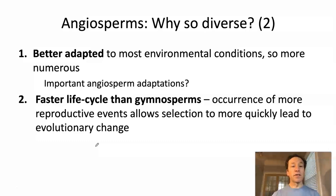Second, the life cycle of angiosperms is faster than gymnosperms. We just alluded to one aspect of this — the gametophyte generations happen very quickly in angiosperms (pollen and ovules). But life cycles are also faster more generally. Why is this important? If we have more reproductive events, then we have more opportunity for selection to lead to changes in traits, so the rate of evolutionary change can be faster.